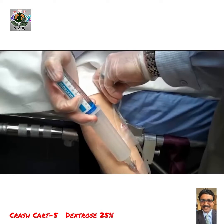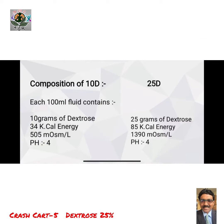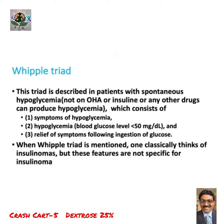Glucagon comes in powder form and needs to be reconstituted before use. D25 needs to be given in a wide vein using a wide cannula. D25, in the dose of two to four ml per kg, should be given slowly over two minutes in cases of hypoglycemia.